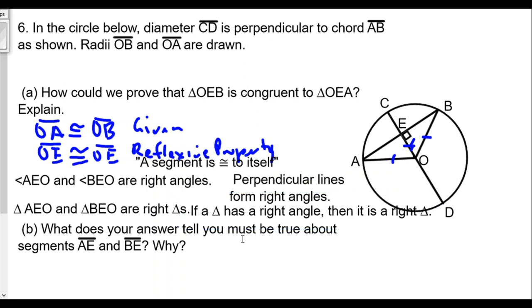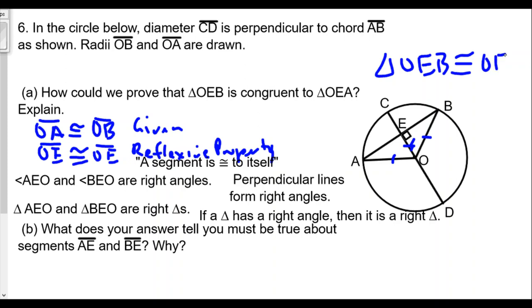Now we know that both triangles are right triangles. We have OE congruent to OE itself and OA congruent to OB. Therefore, triangle OEB is congruent to triangle OEA by hypotenuse-leg. If the hypotenuse leg of one right triangle is congruent to the hypotenuse leg of another right triangle, then the two triangles are congruent.